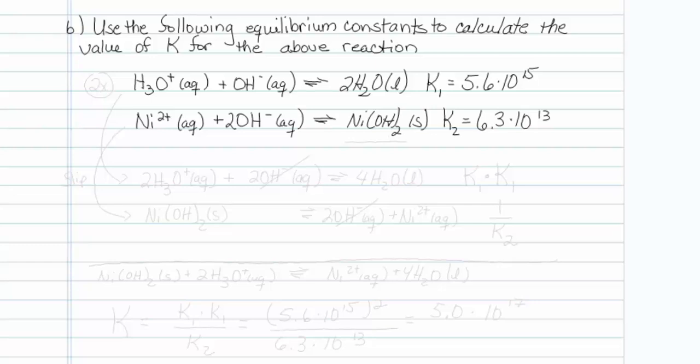The next part of this question says, using reactions below with their equilibrium constants, calculate the value of K for the above reaction. Looking at this, it looks like I need two times the first reaction because I've got two hydroniums on the reactant side.